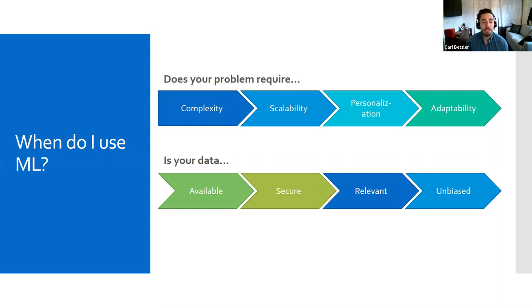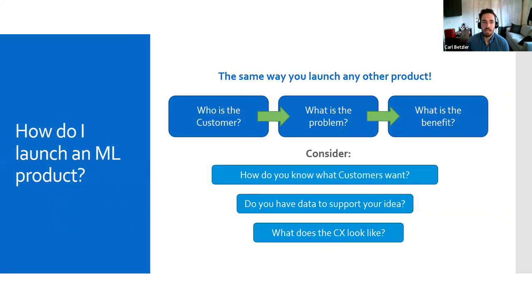Now, if your problem meets all of these requirements, then it's time to consider your data. To build an effective machine learning model, you need access to a large, secure, relevant, and unbiased data set. One of the most common mistakes when building ML products is a garbage in, garbage out type scenario. This is when your data is not high quality and you try to train a model on it. And in that scenario, you're not going to be able to trust any of the insights because the data itself is flawed. And so the insights the computer gleans from it are also flawed.